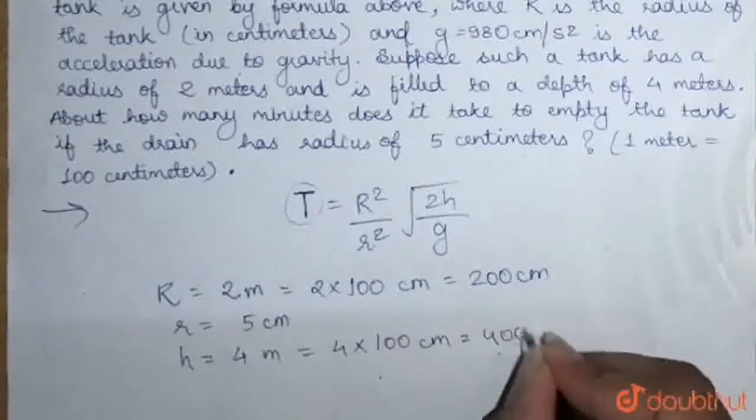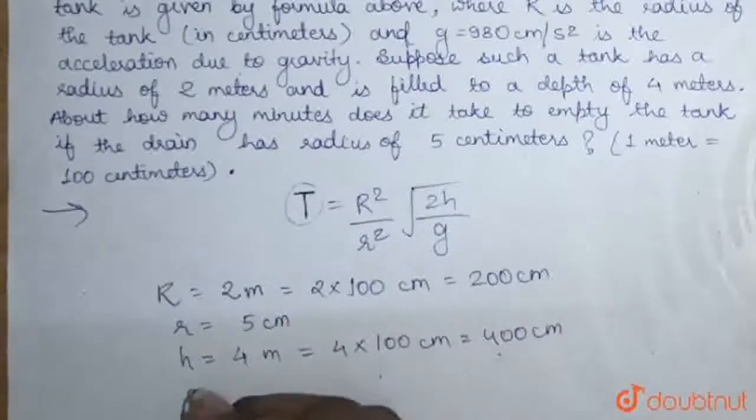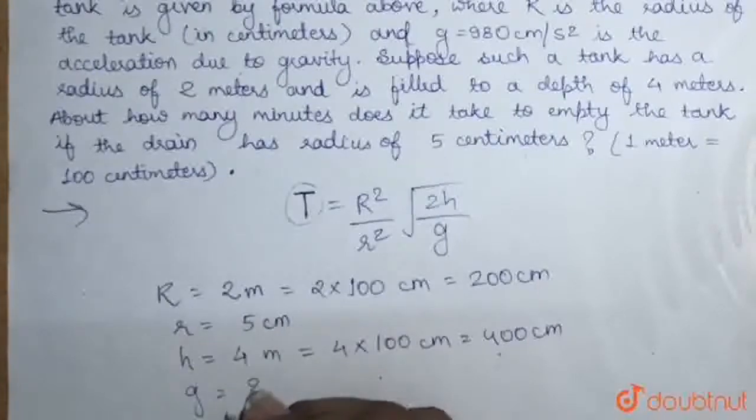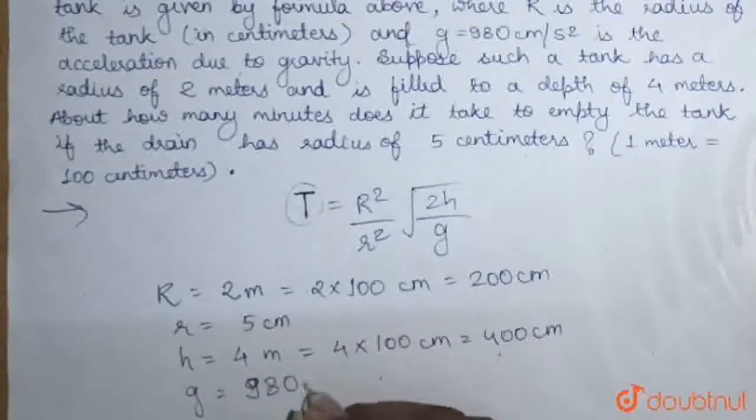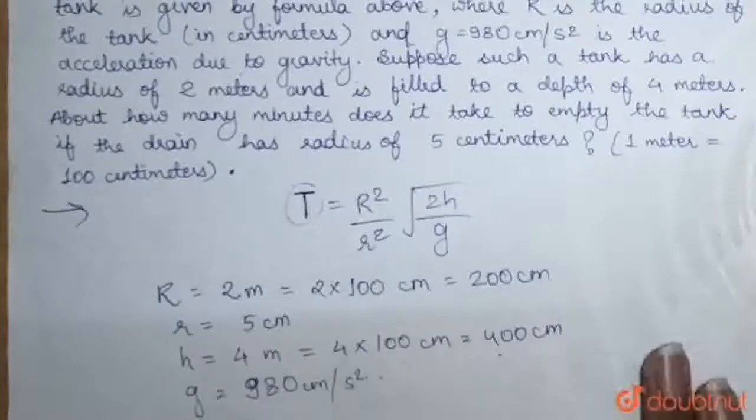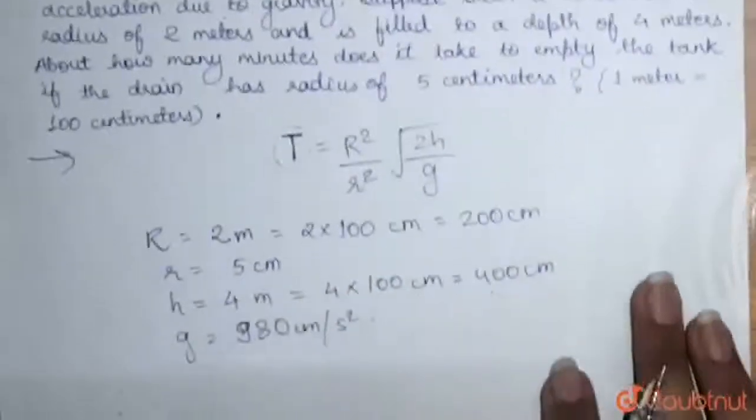which equals 400 centimeters. And g is given as 980 centimeters per second squared. Now we have to find t. So, we will substitute the values in the equation.